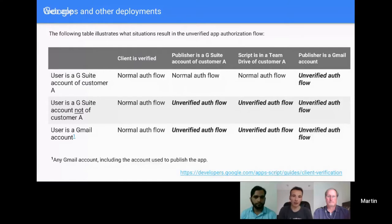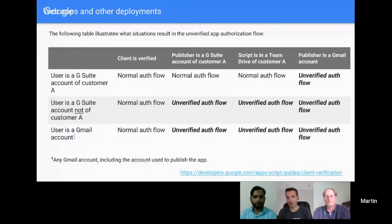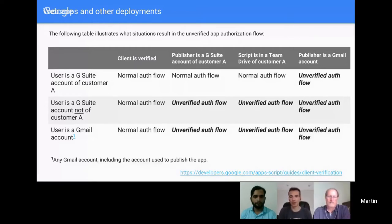If you go through the verification process, you get the normal flow — users still have to click their account and accept the scopes, but they don't get that scary 'this is an unsafe or unverified app' warning. Within G Suite, if you're publishing something in your G Suite domain and it's used by another G Suite user in the same domain, they're not going to get the unverified authentication. It's only when you go outside of your G Suite domain that you need to look at getting your app verified.